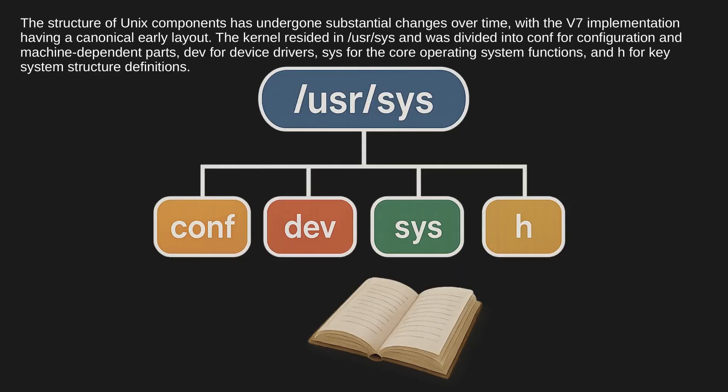The structure of Unix components has undergone substantial changes over time. The V7 implementation had a canonical early layout: the kernel resided in /usr/sys and was divided into conf for configuration and machine-dependent parts, dev for device drivers, sys for core operating system functions, and h for key system structure definitions.